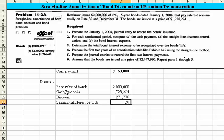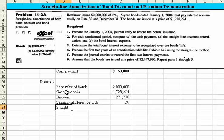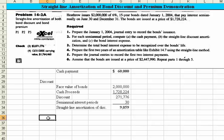We simply divide the discount by 30 to determine the straight-line amortization of the discount each period. That would be $271,776 divided by 30, or $9,059 per period.